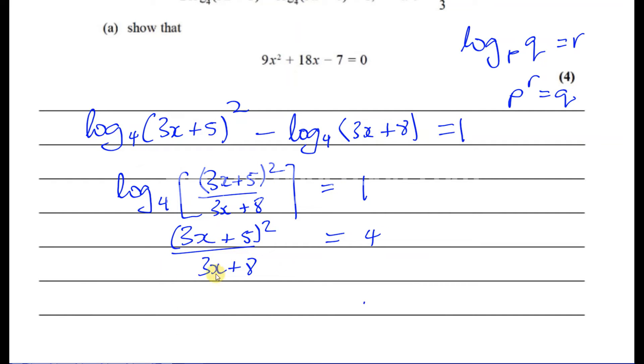So now I can multiply both sides by 3x plus 8. And at the same time, I will expand this bracket. So this is going to give me 3x all squared, which is 9x squared, plus 2 times 3x times 5. That's 2 times 3x, which is 6x times 5, which is 30x. And then I've got to square the last term, which is going to give me 25. And that's equal to 4 times 3x plus 8. 4 times 3x is 12x. And 4 times 8 is 32.